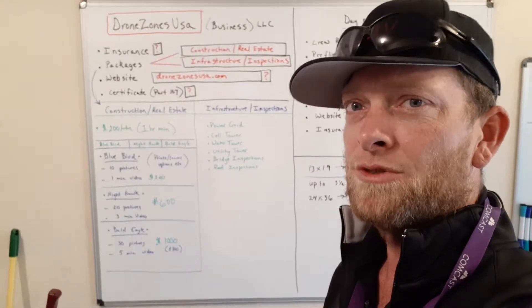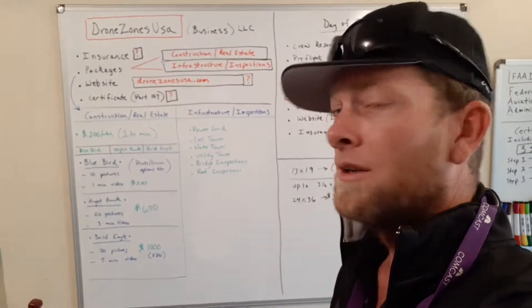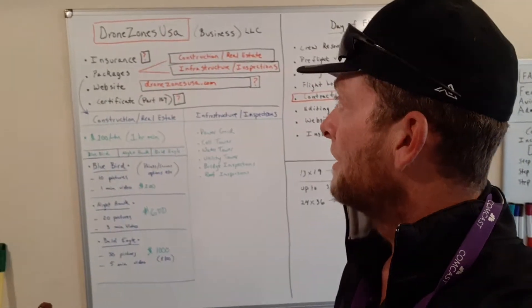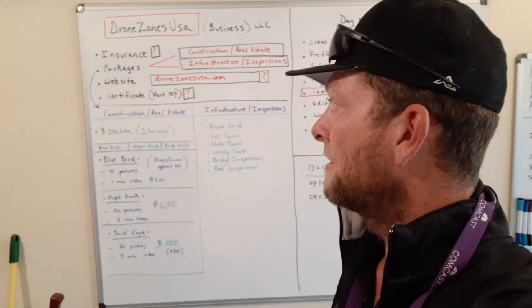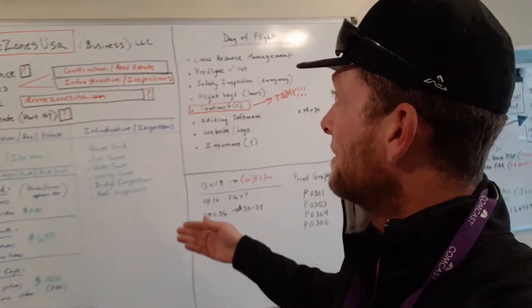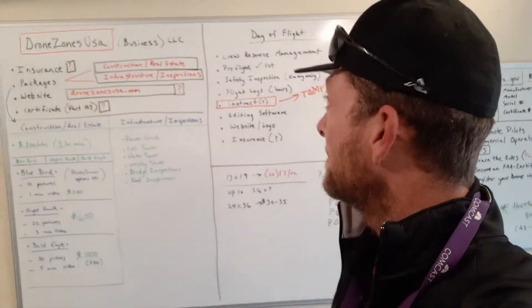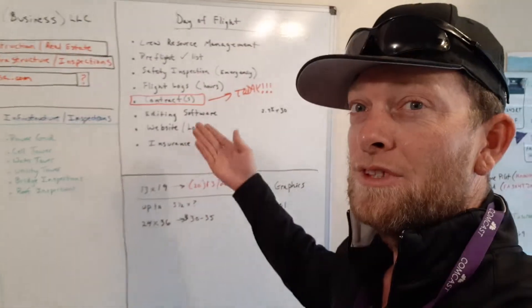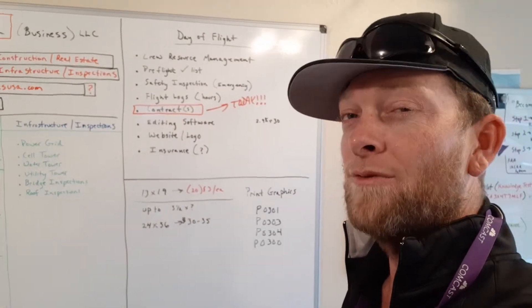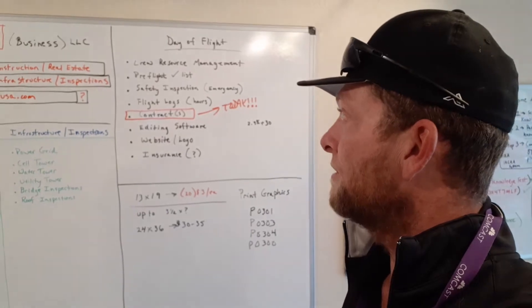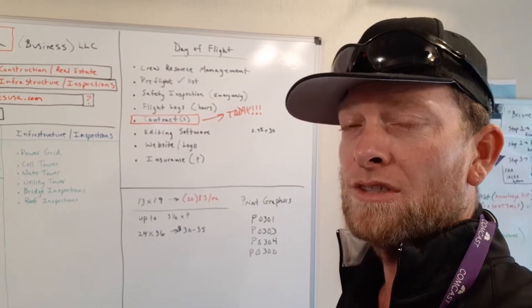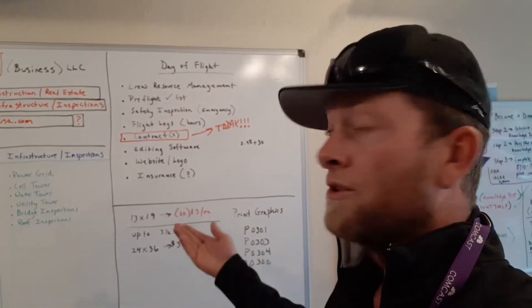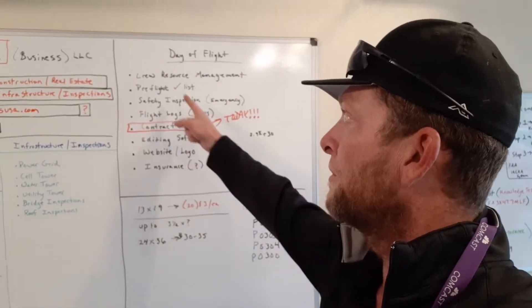Here I covered different insurance options, different packages, my website. You can see I did get my LLC. There are also things you need to consider like your pre-flight checklist, safety inspection, flight logs, contracts, editing software, establishing your website, your logo, your insurance, and also really important - your crew resource management.